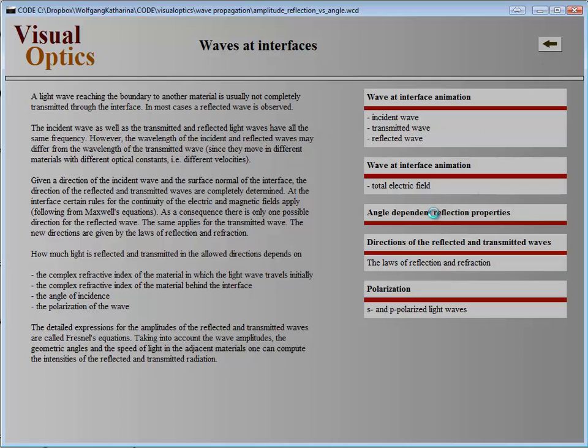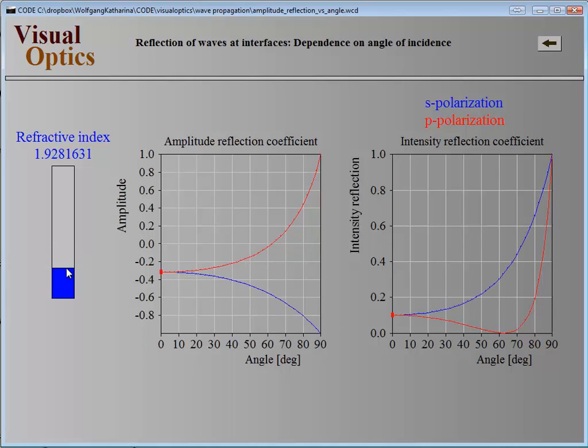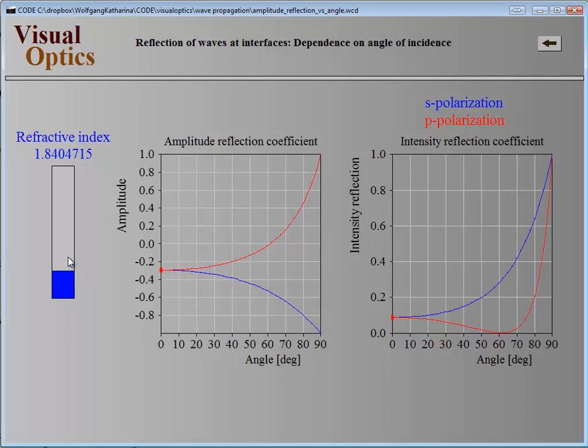Here's another example of the difference to a static book. These are the intensity reflection coefficients at an interface for S-polarization and P-polarization. Instead of just a static picture, you can change the refractive index and see how these curves change. We can cover a lot of examples on just one page. You can do all the examples.